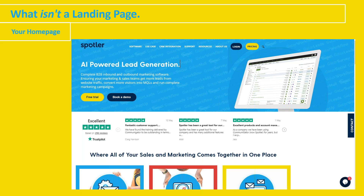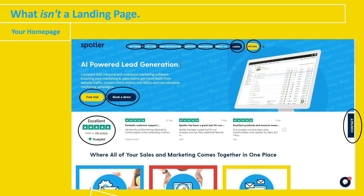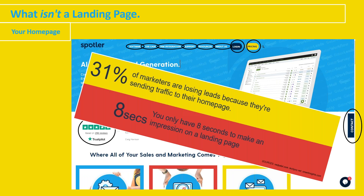The cardinal sin we still see is a sponsored LinkedIn update that redirects to the homepage. This isn't a landing page because there are just too many routes people can travel. Looking at the first half of Spotler's homepage, you can count 12 different routes someone could wander off to. We've all heard about the eight-second attention span — what it really means is you only have eight seconds to make an impression. No one's achieving anything valuable in eight seconds from a homepage. 31% of marketers are measurably losing traffic by doing this. Even if your landing pages are the most basic, if you just direct people there rather than your homepage, you're getting the jump on 31% of your competition.